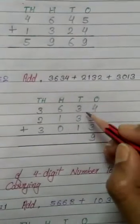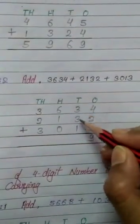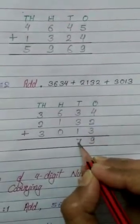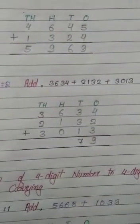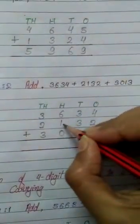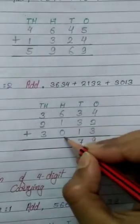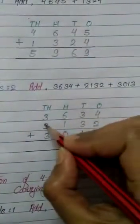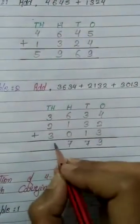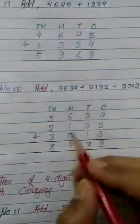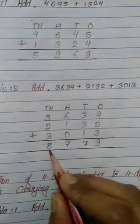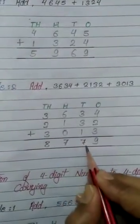Now the 10s place: 3 plus 3 is 6, and 6 plus 1 is 7. Now the 100s place: 6 plus 1 is 7, and 7 plus 0 remains 7. Now the 1000s place: 3 plus 2 is 5, and 5 plus 3 is 8. So the sum of these 3 numbers is 8,779.